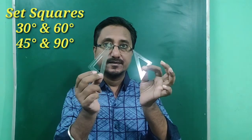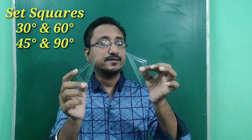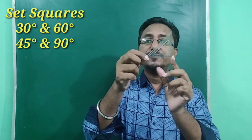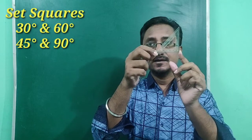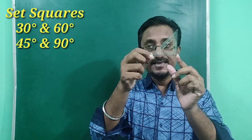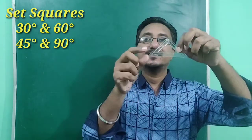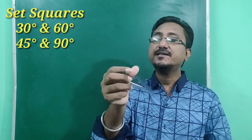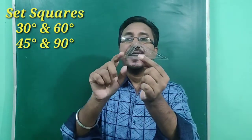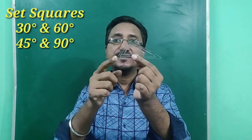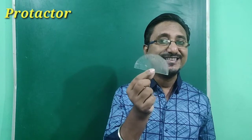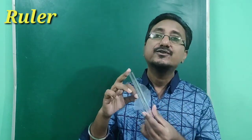We also have two set squares. In one set square, the angles are 90 degrees on one side and 45 degrees on the other. In the other set square, the angles are 60 degrees and 30 degrees. There is also a protractor and a ruler. These are the instruments we need for construction.